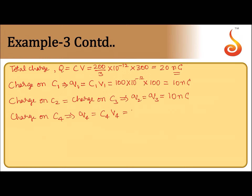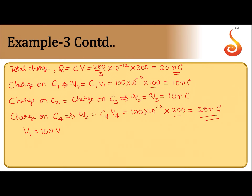Charge on C4: Q4 equals C4 times V4. C4 is 100 picofarad; voltage across C4 is 200 volts — since 300 volts gets divided into 100 volts and 200 volts — so Q4 equals 20 nanocoulombs. The voltage across C2 and C3 is 50 volts each (50 plus 50 equals 100), and V4 equals 200 volts. This is what was asked for.